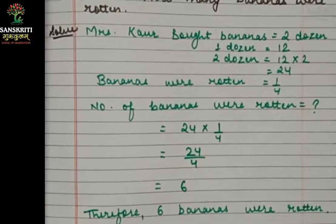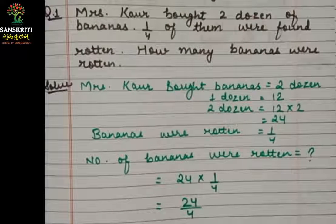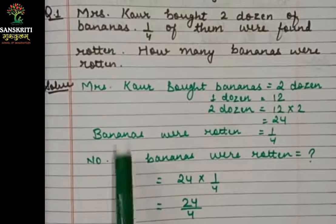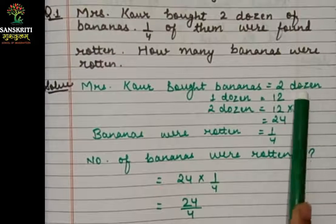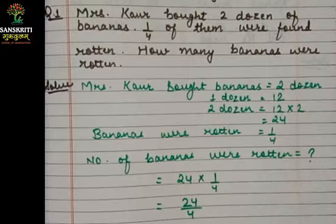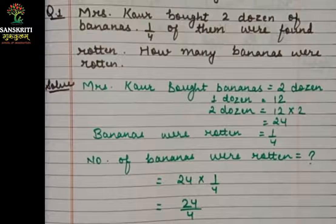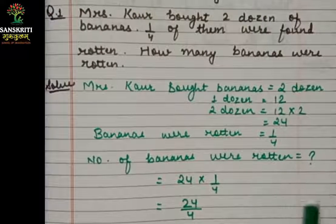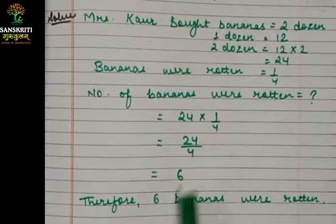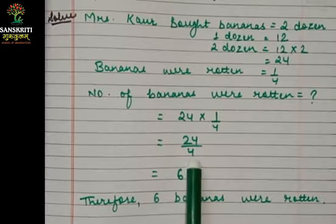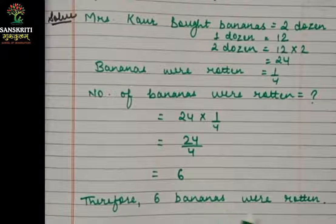Let's review Question 1. Mrs. Kaur bought 2 dozen bananas. 1 dozen has 12, so 2 dozen equals 12 multiplied by 2, which is 24. One fourth of the bananas were rotten. We took 1 by 4 of 24 — that is, 24 divided by 4 equals 6. Therefore, 6 bananas were rotten.